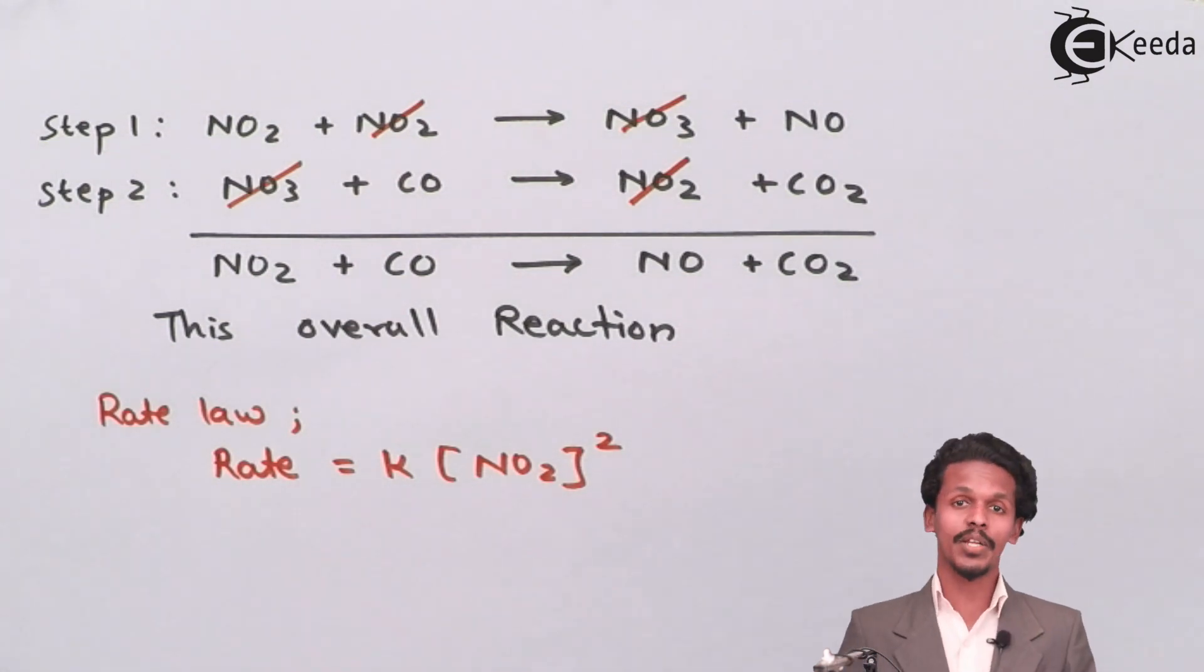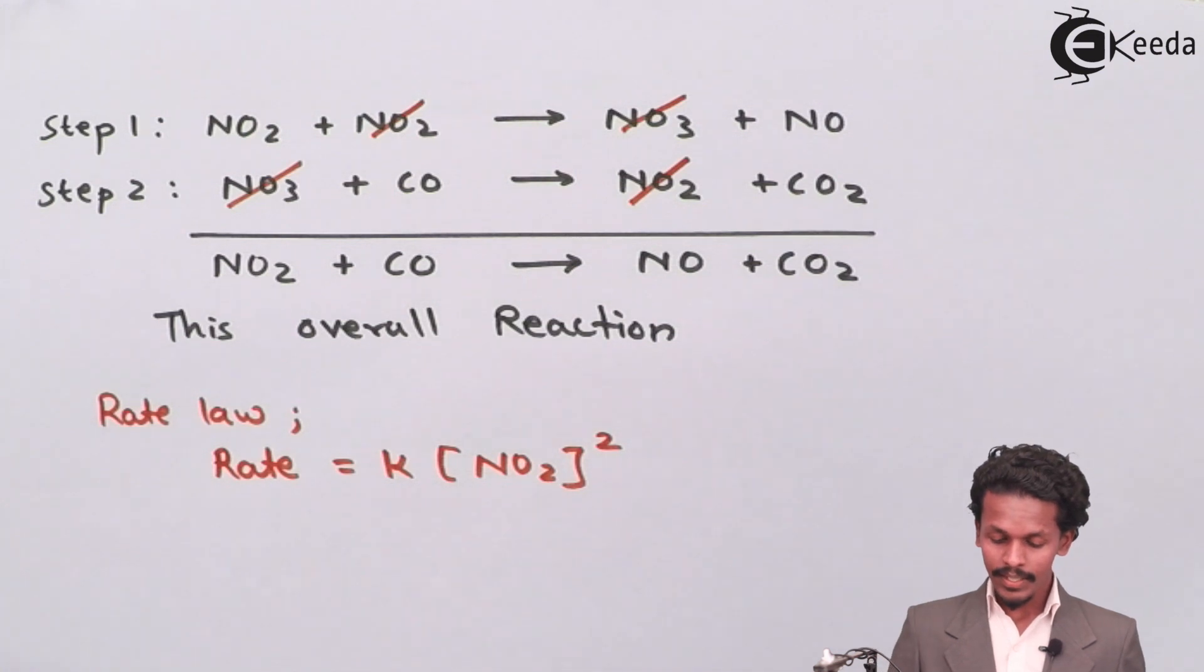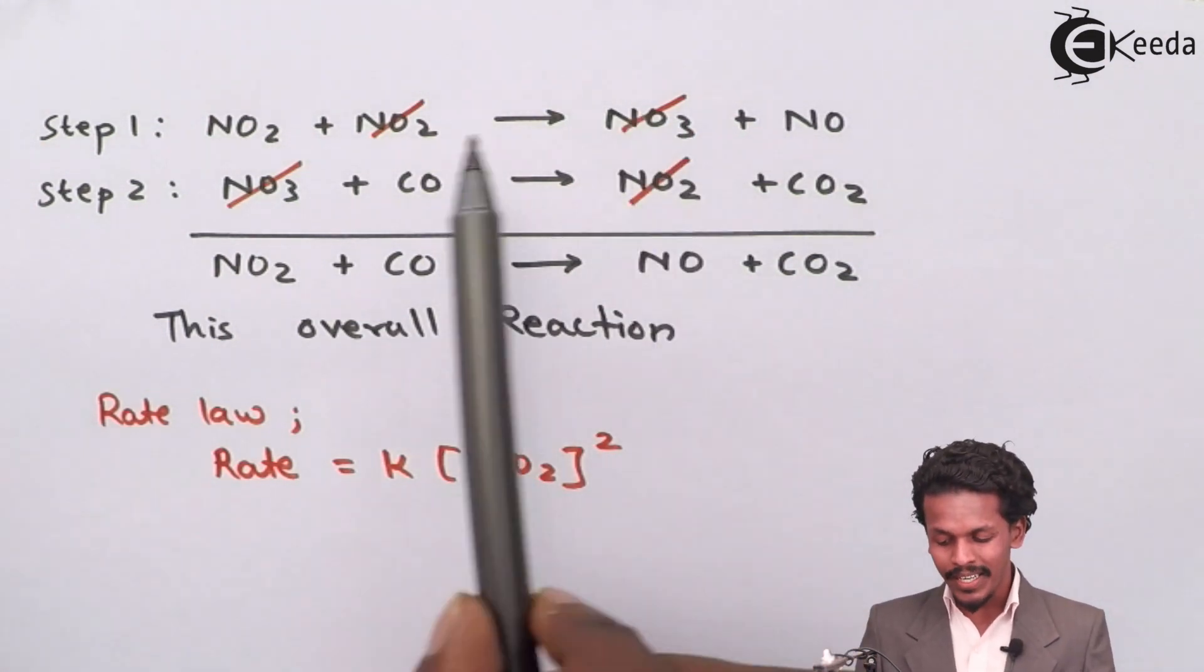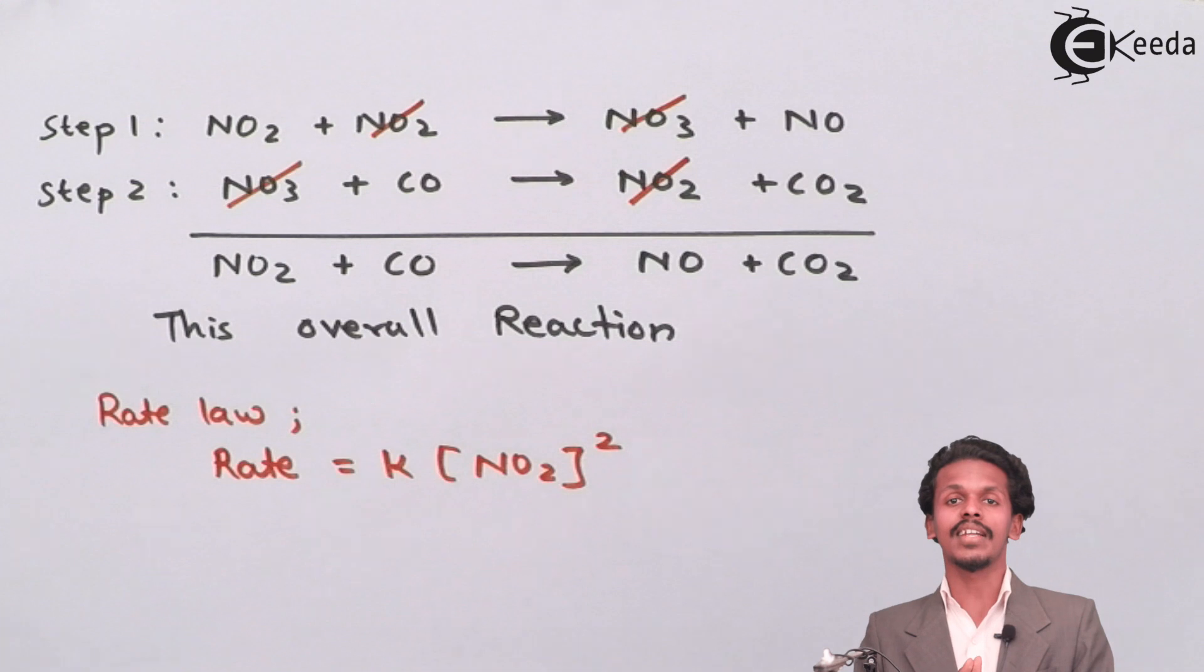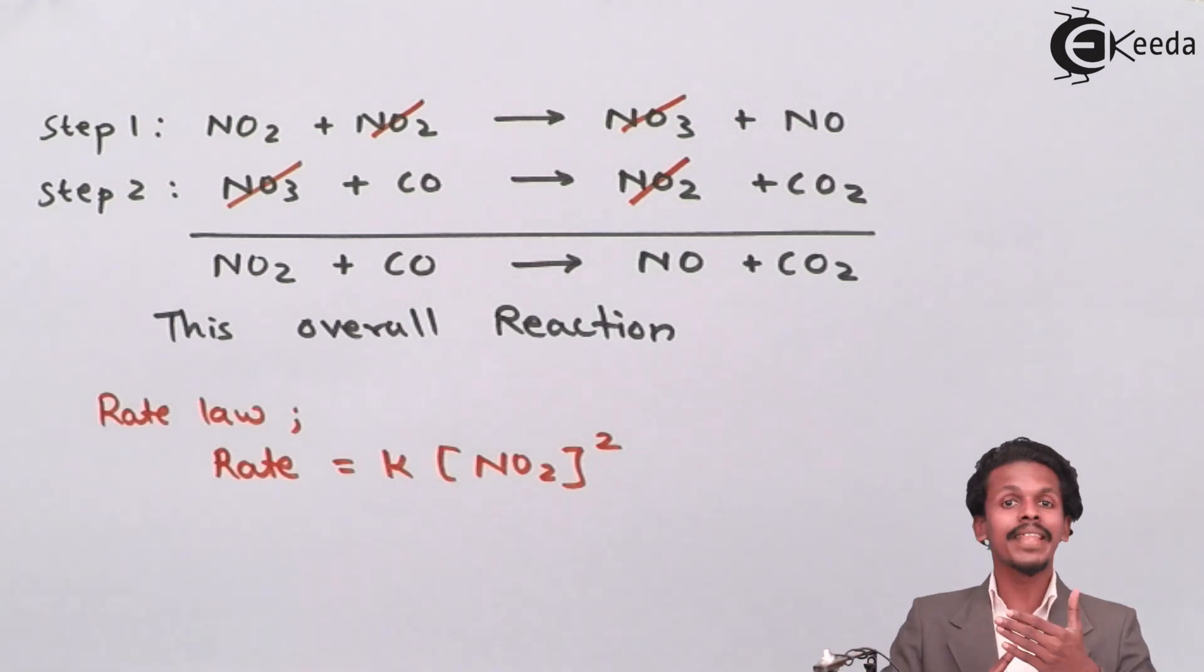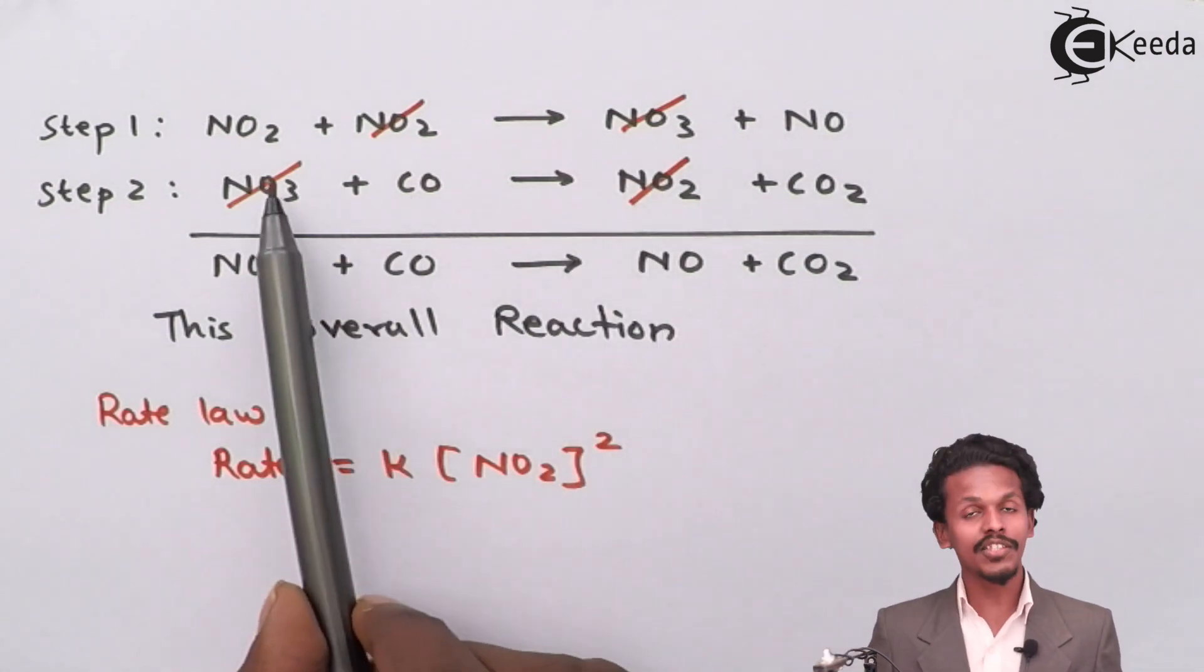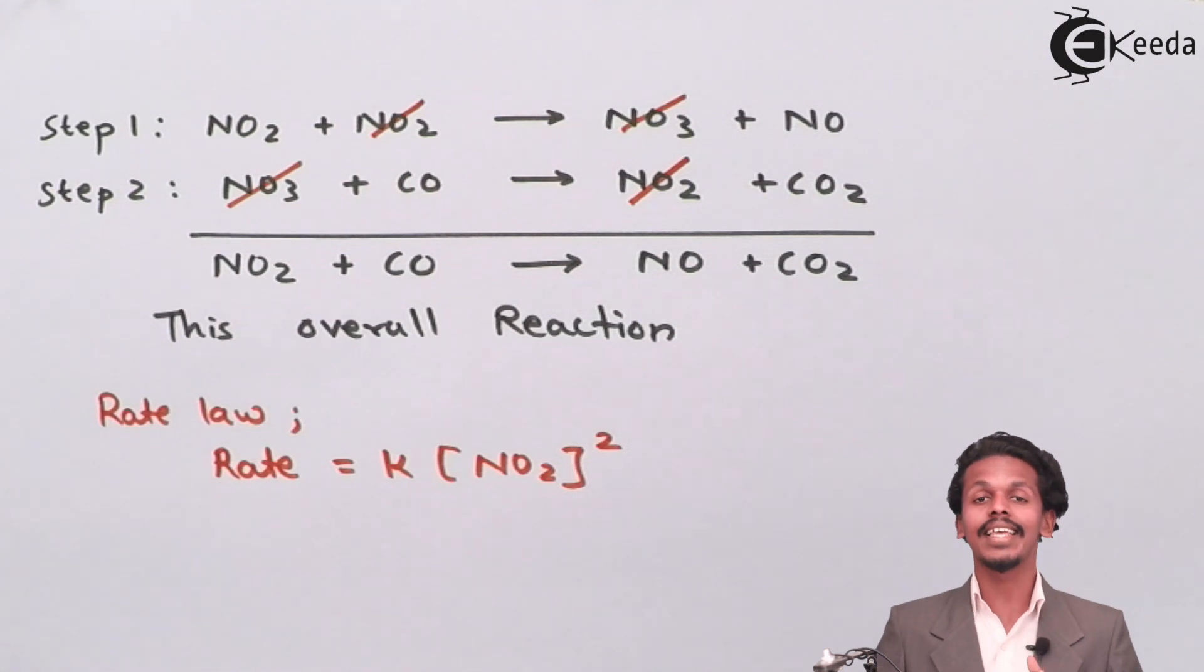The last requirement is what is the role of NO3. In this reaction, NO3 has been formed in step number one and it has been consumed in step number two, and from that the reaction has proceeded. Therefore, this NO3 will be said to be the intermediate of this reaction. It should not be said as a catalyst because it is once formed and again consumed, and we are not getting NO3 again. Therefore, NO3 is not a catalyst but yes, it is a reaction intermediate.